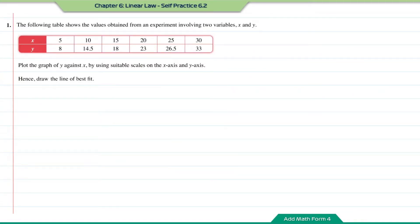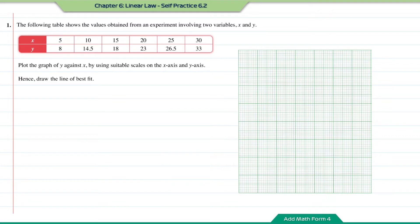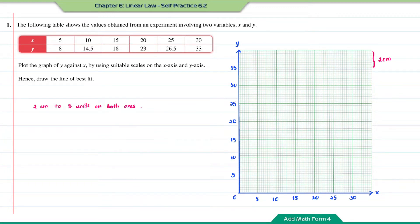Self-practice 6.2, question number 1. The following table shows the values obtained from an experiment involving two variables x and y. Plot the graph of y against x by using a suitable scale on the x-axis and y-axis. Hence, draw the line of best fit. Based on the data in the table, I'm going to use 2 cm to 5 units for both axes. Now let us plot the points given in the table into the graph. To draw the line of best fit, we draw a straight line that passes through as many points as possible, and any points not on the line should be almost equally distributed on both sides.